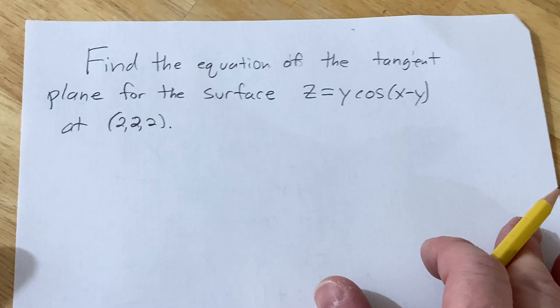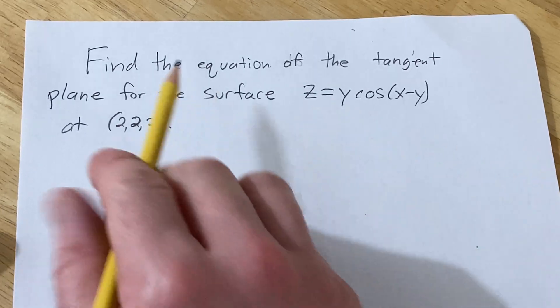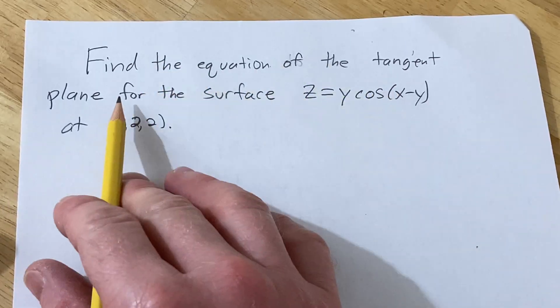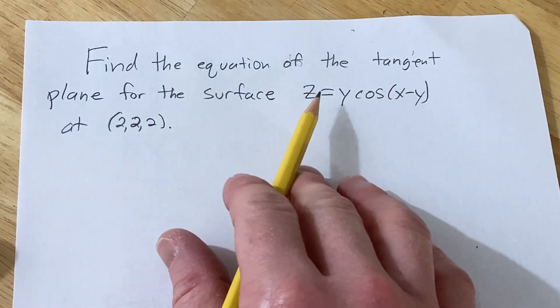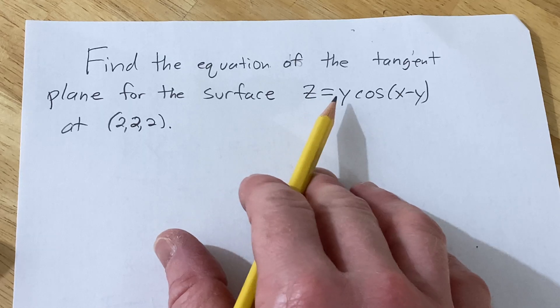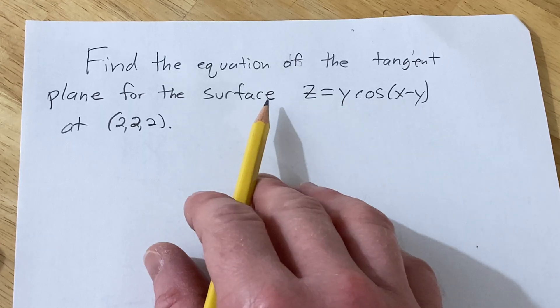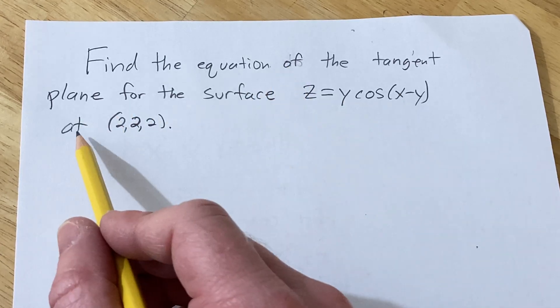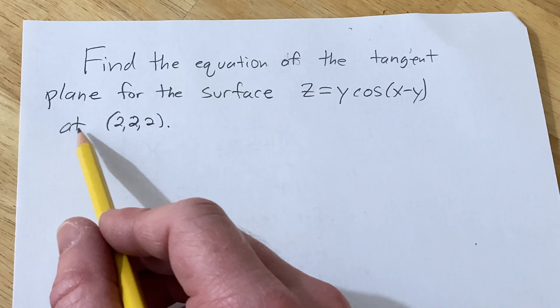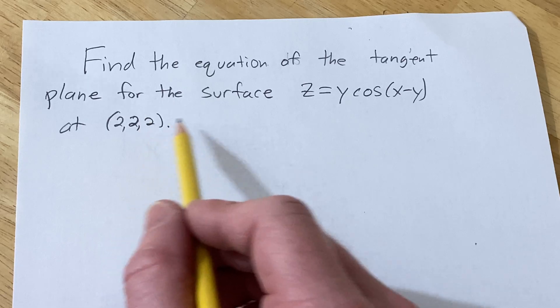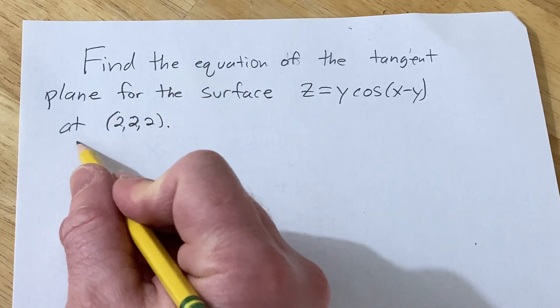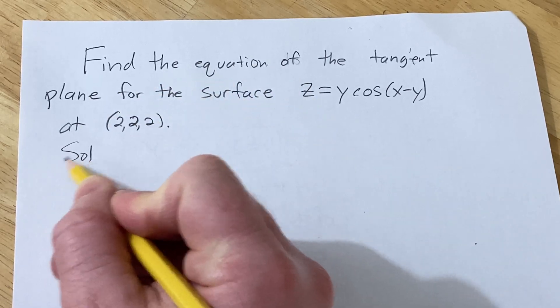In this video we're going to find the equation of the tangent plane to the surface z equals y times the cosine of x minus y at the point (2, 2, 2).